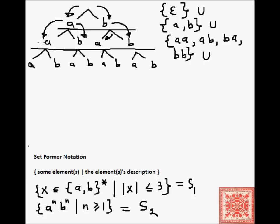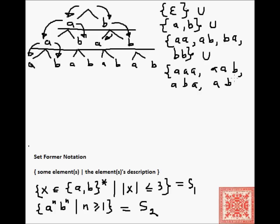Then we add the strings of length 3. For every path in that tree, we get a unique string. Those are: aaa, aab, aba, abb, baa, bab, bba, and bbb.